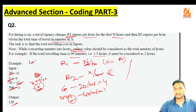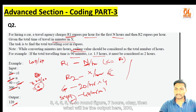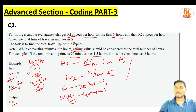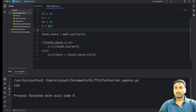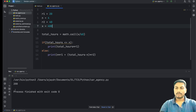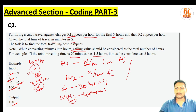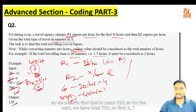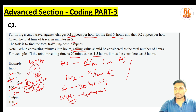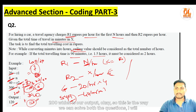Let's verify with another example where x = 400. That gives ceil(400 / 60) = 7 hours. With n=4, the first 4 hours cost 4 × 20 = 80, and the remaining 3 hours cost 3 × 40 = 120, totaling 200. The code outputs 200, confirming correctness.